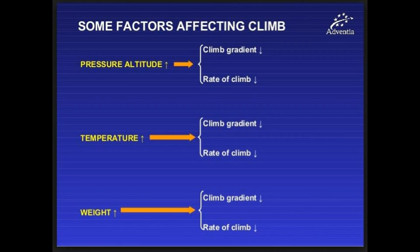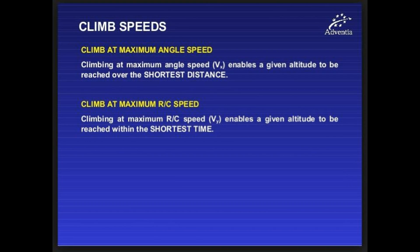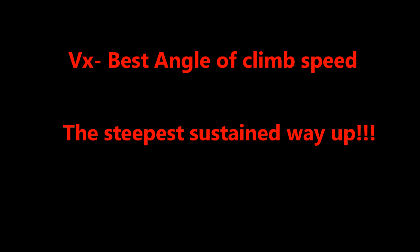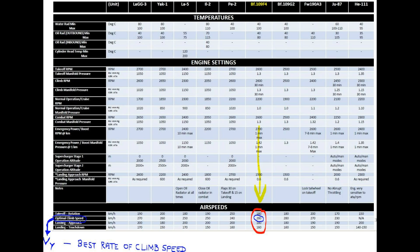Of course, there are several factors that affect our ability to climb in the aircraft. Next we have VY, which is the best rate of climb speed — it's the fastest way up. And we have VX, which is the best angle of climb speed. The only number I have for the 109 is the best rate of climb at 280.